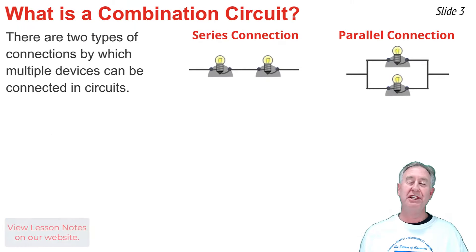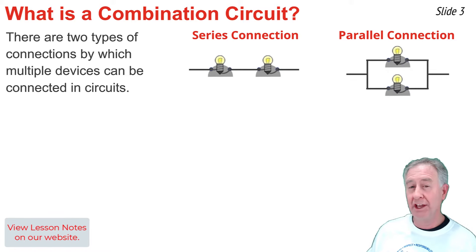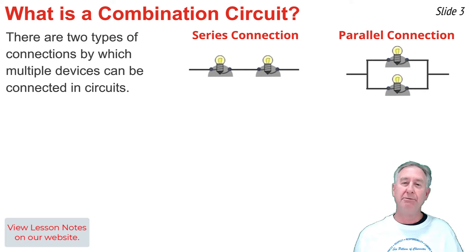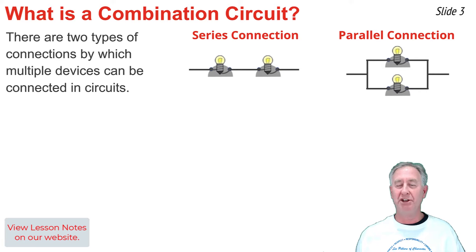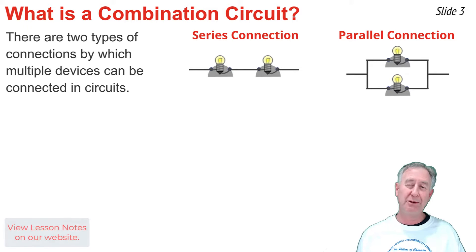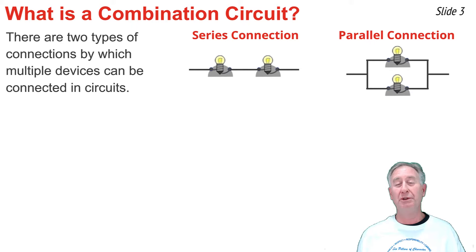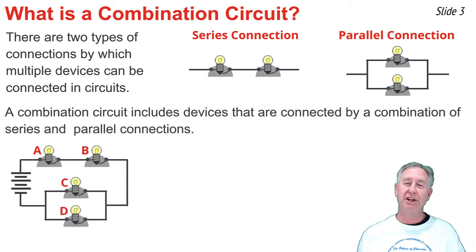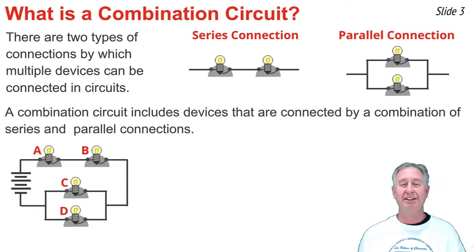When there are two or more devices in a circuit, there are a couple of means by which to connect them. The first type is a series connection, where devices are connected back-to-back and any charge going through one device automatically goes through the second. The second type is a parallel connection, where devices are placed in their own separate branches. A node is where current separates into two or more pathways. A combination circuit combines both parallel and series connected devices.